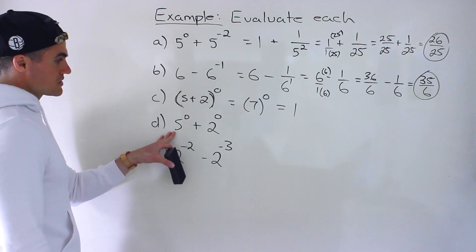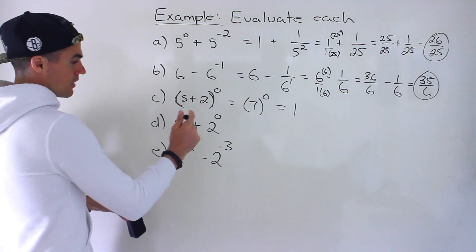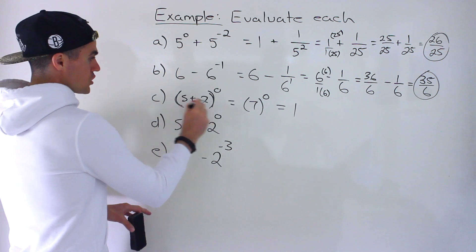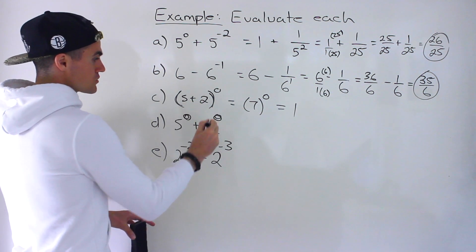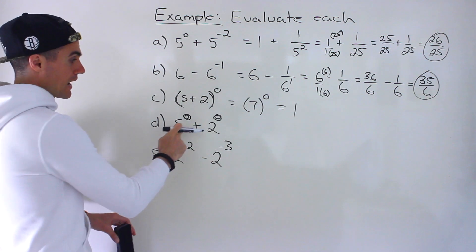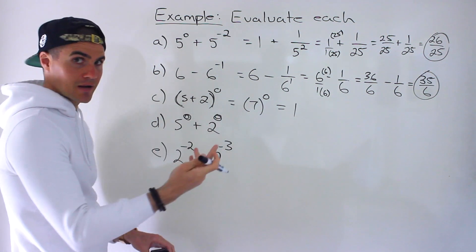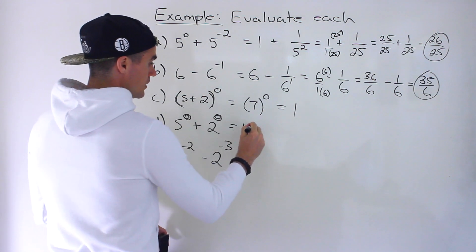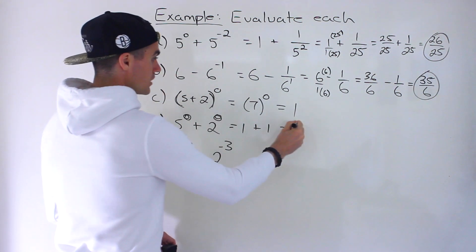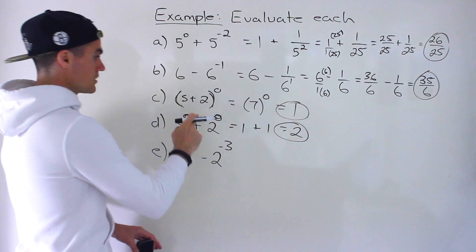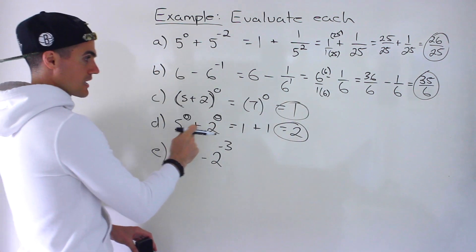Over here, notice that similar, but not really, because now each of these, there's no bracket, but each of these has that exponent 0. So in this case, there's no bracket. So we'd have to deal with the exponential terms first. So 5 to the power of 0 is 1. 2 to the power of 0 is 1. And so this here would equal 2.